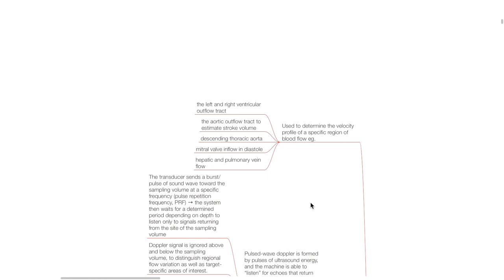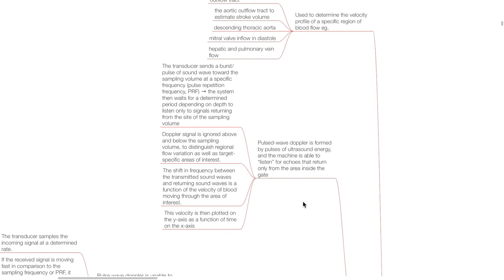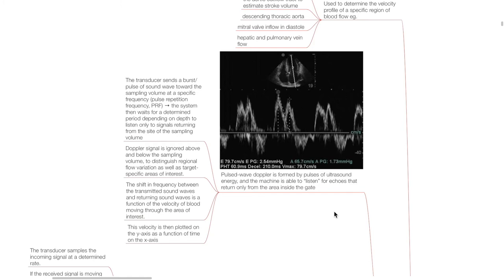Pulsed wave Doppler is used to determine the velocity profile of a specific region of blood flow, such as the left and right ventricular outflow tract, aortic outflow tract to estimate stroke volume, descending thoracic aorta, mitral valve inflow in diastole, and hepatic and pulmonary vein flow. Pulsed wave Doppler is formed by pulses of ultrasound energy; the machine listens for echoes returning only from the area inside the gate. The transducer sends a burst of ultrasound at a specific Pulse Repetition Frequency (PRF), then waits for a determined period depending on depth to listen only to signals returning from the sampling volume. The shift in frequency between transmitted and returning sound waves is a function of the velocity of blood moving through the area of interest, plotted on the y-axis as a function of time on the x-axis.